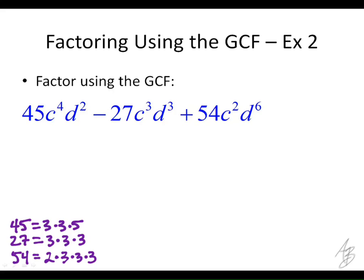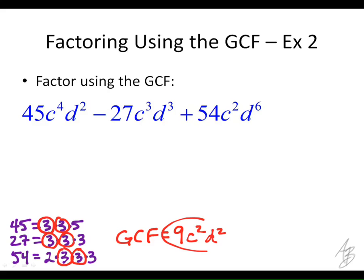Now we look for what they have in common. They share a 3 and another 3. Anything else? No. So the GCF for the numbers is 3 times 3, which is 9. Then we look at the C's and D's — how many C's do they have in common? 2. And how many D's do they have in common? So the GCF is 9C squared D squared.